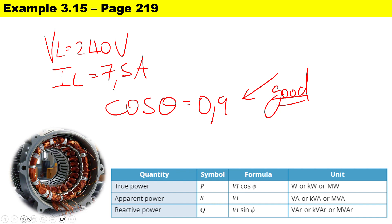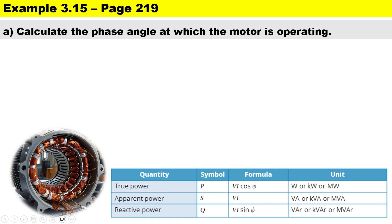Now let's look at the formulas we'll be using for this calculation. True power: symbol P, formula V·I·cos θ, units watts. Apparent power: symbol S, formula V·I, units volt-amps. Reactive power: symbol Q, formula V·I·sin θ, units volt-amps reactive.